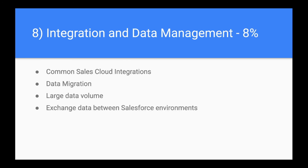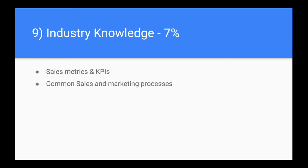The eighth module is about integration. We will be discussing common Sales Cloud integrations, data migration strategies, and how to handle large data volumes. The ninth module is the least weighted — it is about industry knowledge, but there are some common KPIs, or key performance indicators, that you need to know for the exam, and we will be covering those as well.